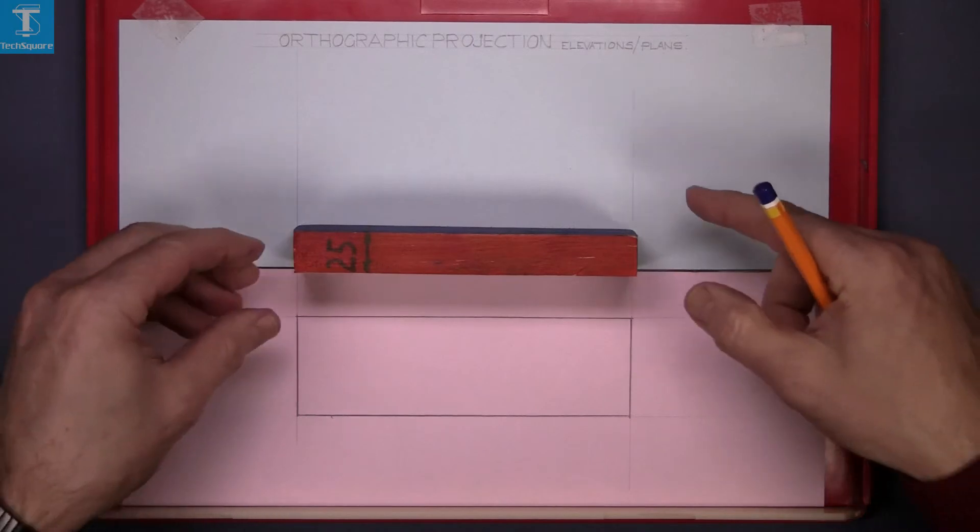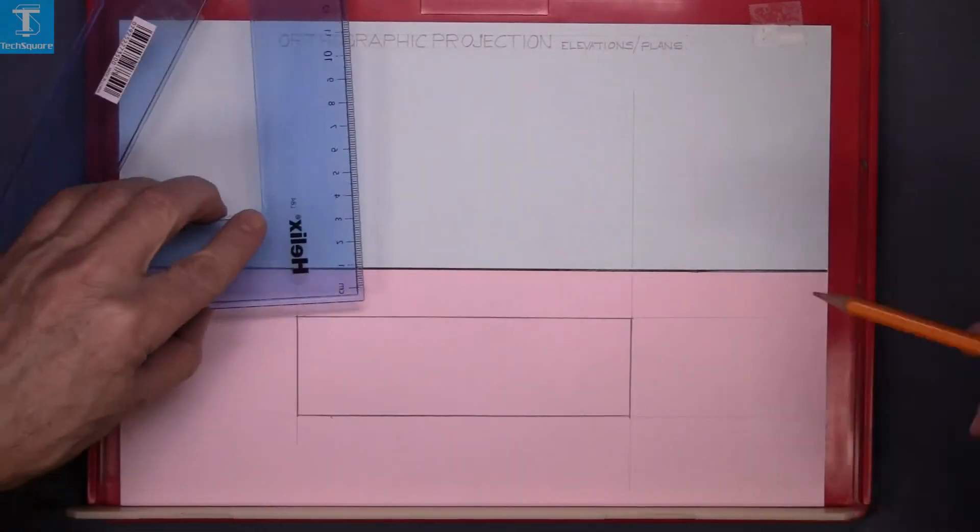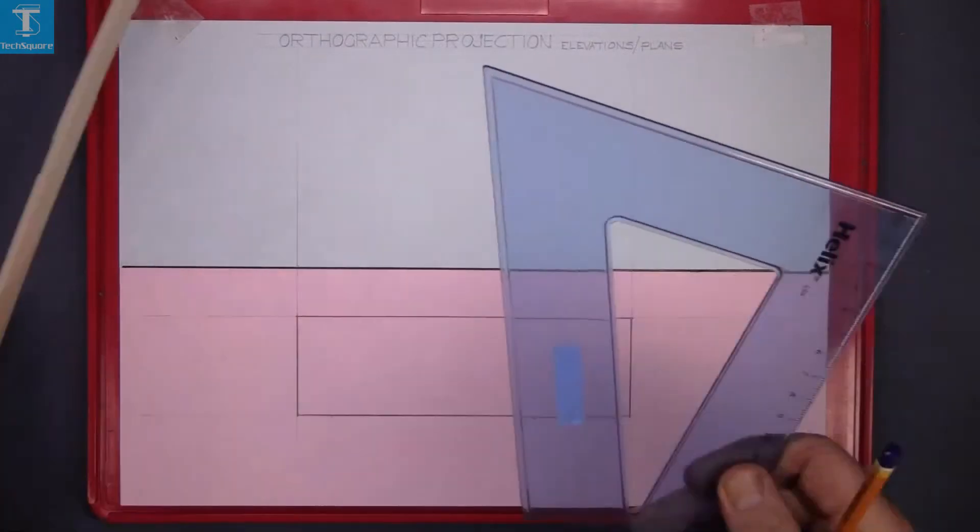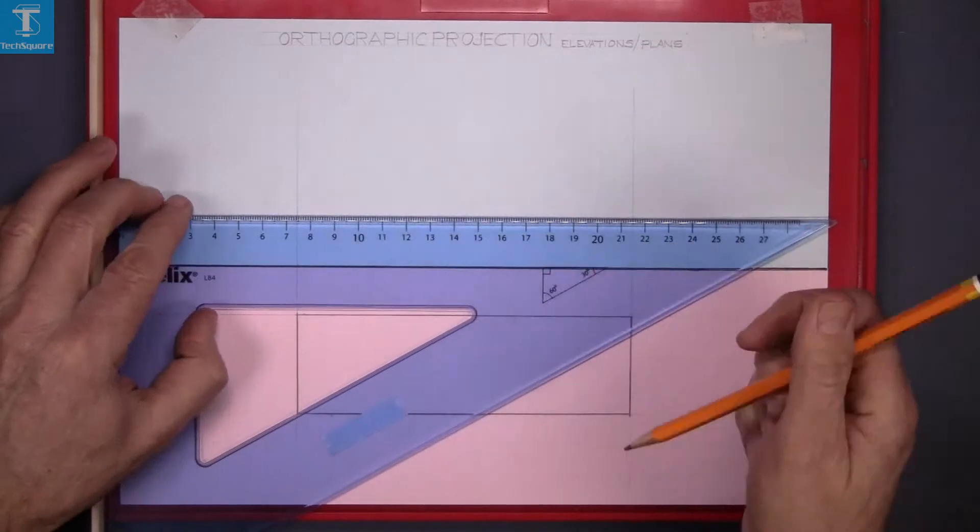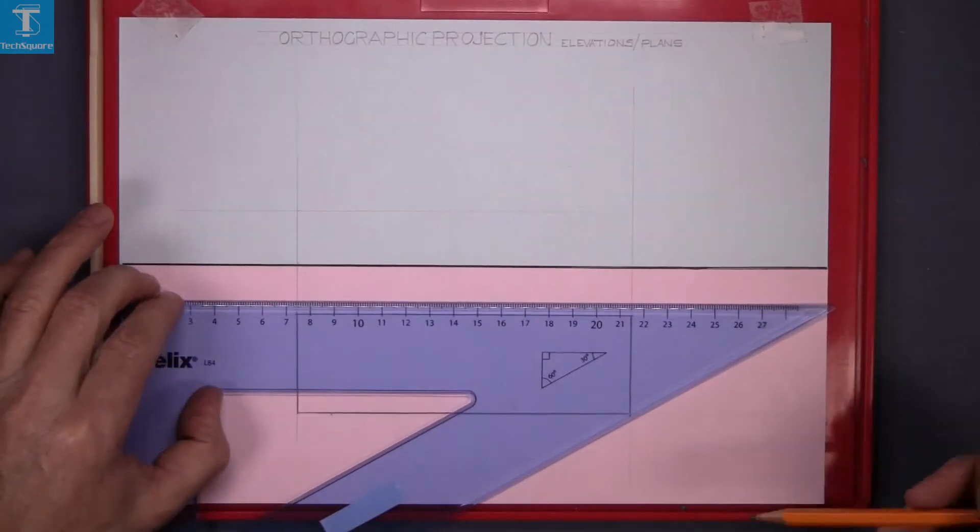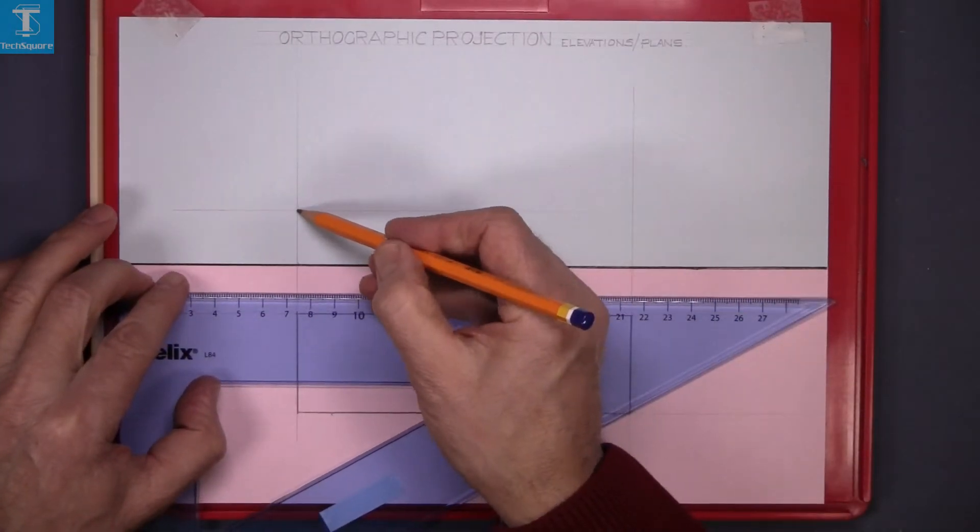The thickness of the piece is 25. Measure up from the edge of the pink, 25 in height, and draw a light line across the sheet. That's the elevation complete.